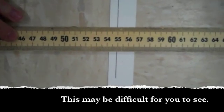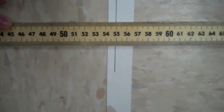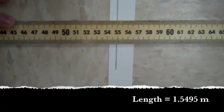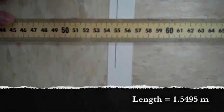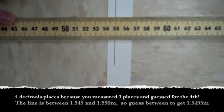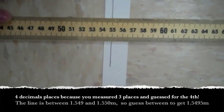And the measurement would be 1.549, and then take a guess, 5. So in meters you should have 4 decimal places: 1.5495 meters.